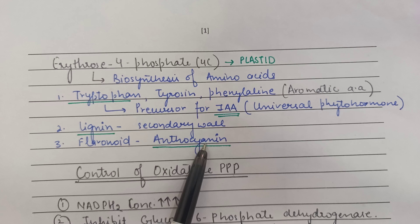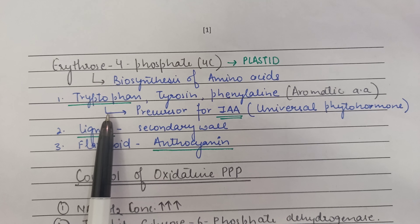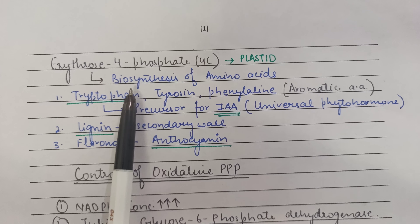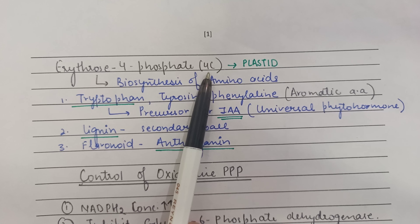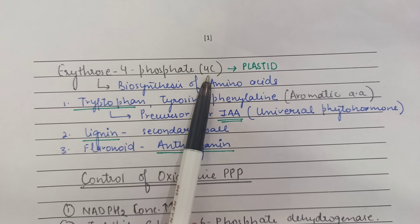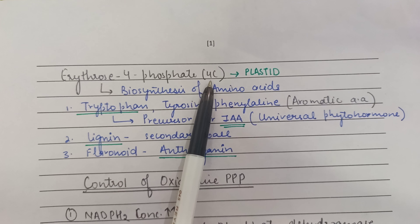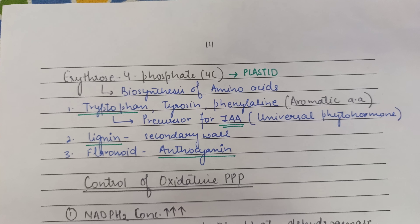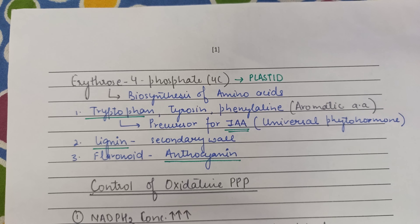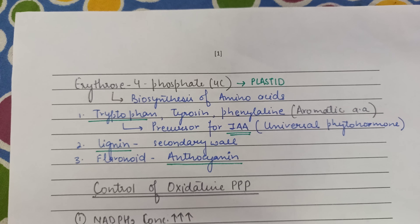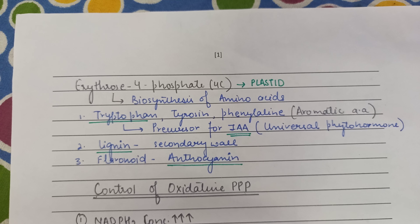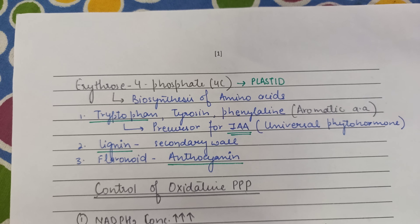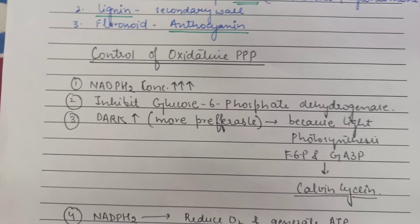This is the reason why the pentose phosphate pathway occurs more in mature cells: after completing the growth phase, mature cells undergo biosynthesis, and erythrose-4-phosphate, ribulose-5-phosphate, and NADPH all contribute to biosynthetic pathways. This is the shunt or alternative pathway of glycolysis — glucose does not always have to undergo glycolysis only.